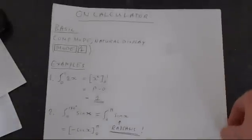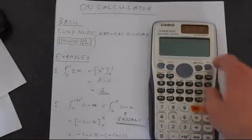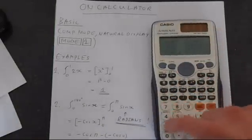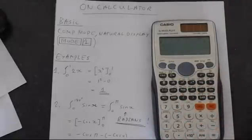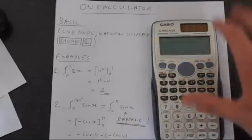So let's do some examples now. So comp mode, natural display. We've just made sure we're in natural display, and we're in comp, which is just mode 1. So this is the normal mode that your calculator will be in. So if nothing is lit up along here, you're in that mode.